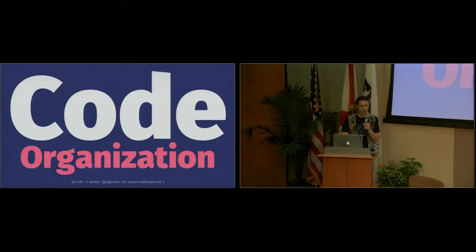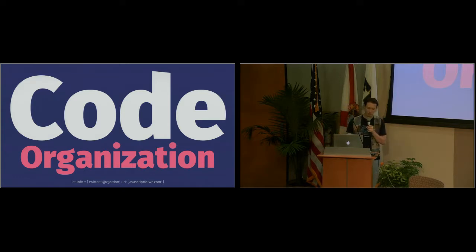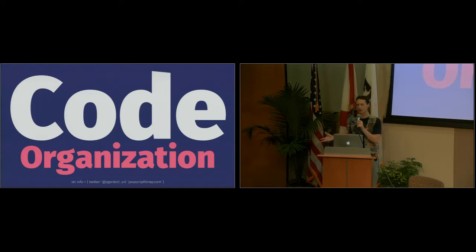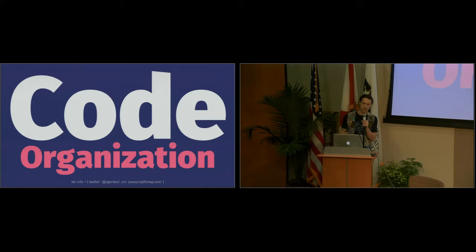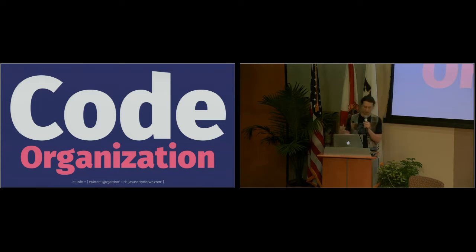So we have our functional programming libraries covered. Now we get to the issue of our app keeps getting bigger — a couple hundred lines — and we need to start breaking it apart and organizing our code better. This is where the libraries and frameworks of Backbone, Angular, and React really come in, because they are going to tell you how you should probably organize and structure your code.